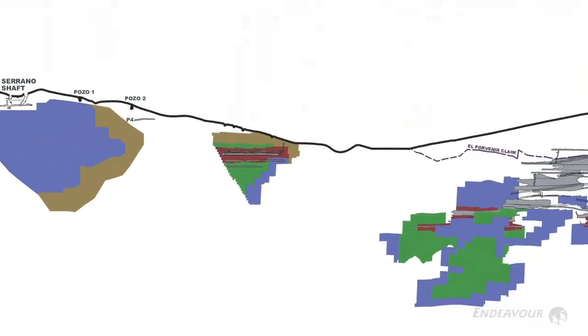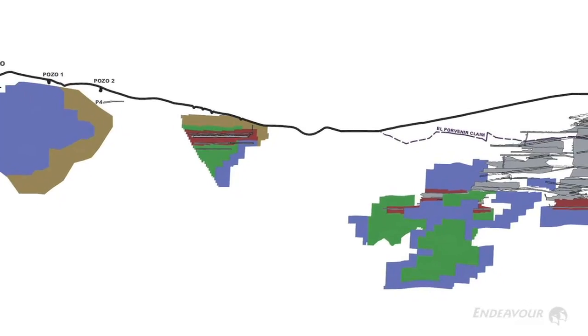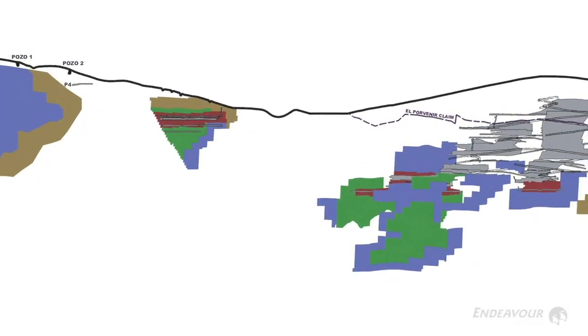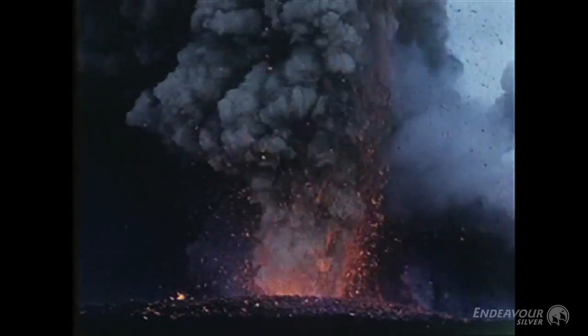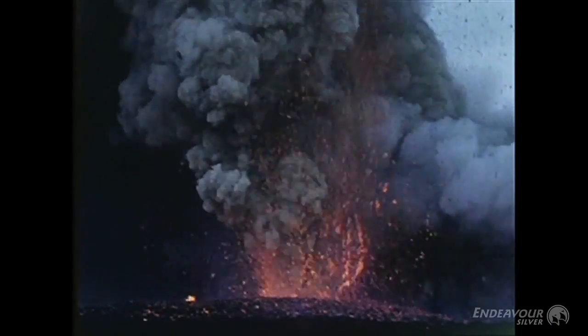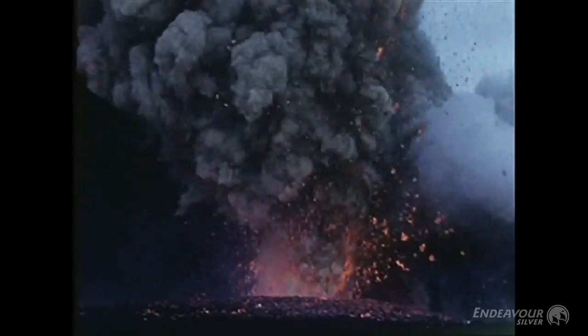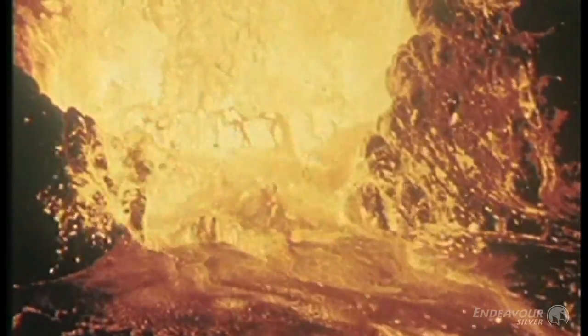A lot of the deposits that we're mining were formed 20 to 25 million years ago. We have to have a volcanic environment, and so what we would see is the surface expression is just the volcano, but the silver veins are forming at depth below the volcano.